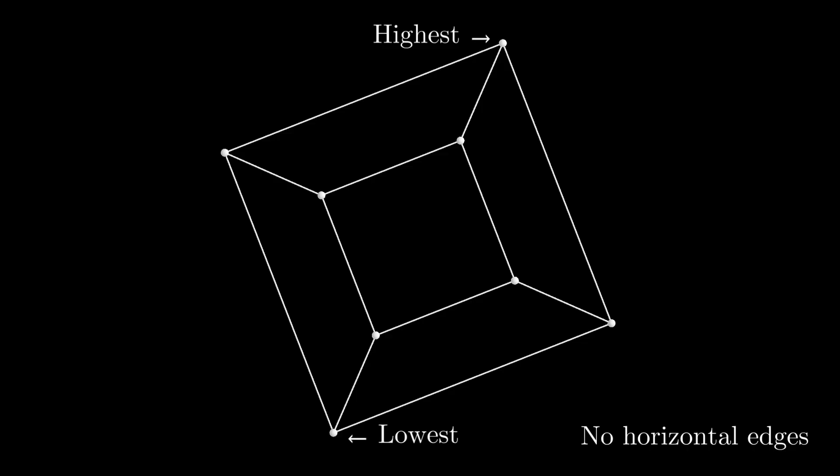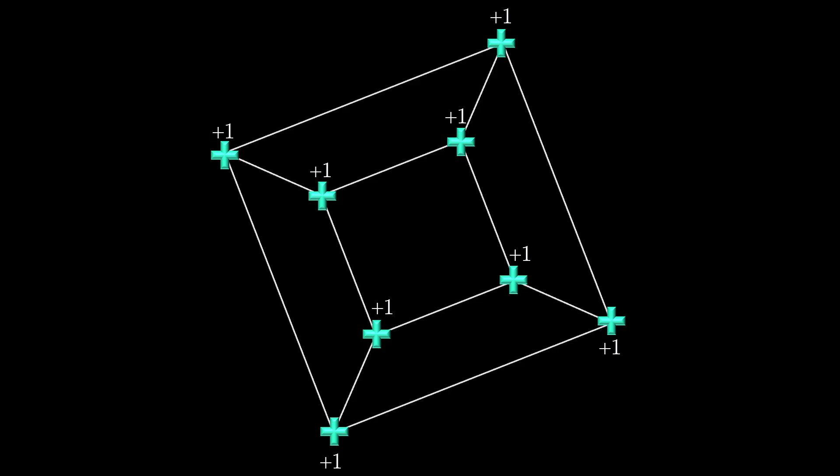From here, we assign so-called charges to the graph's vertices, edges, and faces. We give each vertex a positive charge. Notice that if we think of each of these as a value of positive 1, adding them up would give us the number of vertices, V.